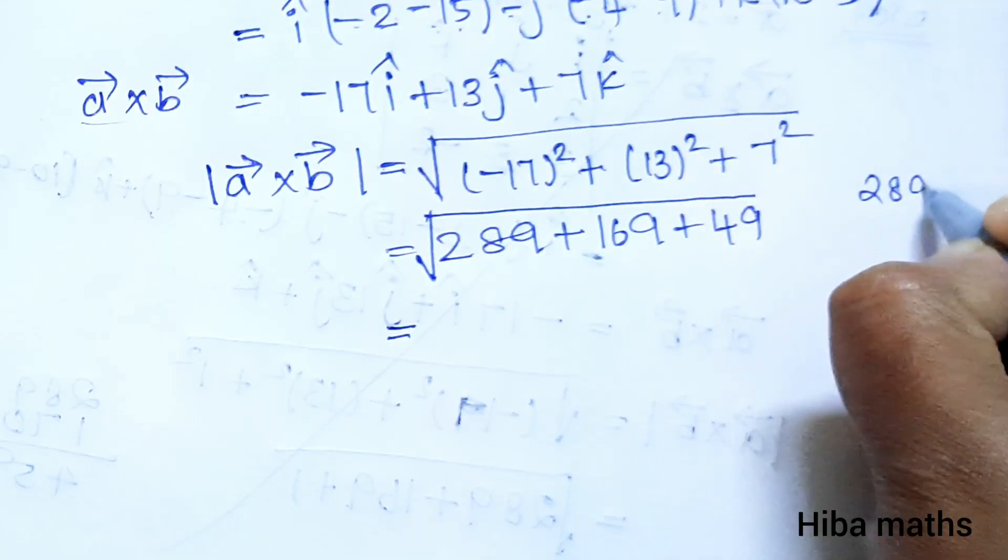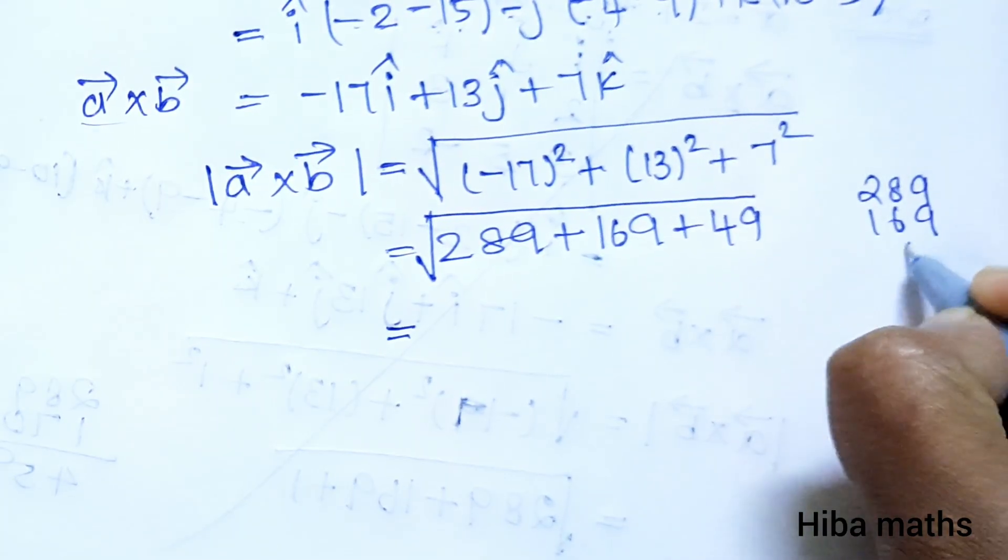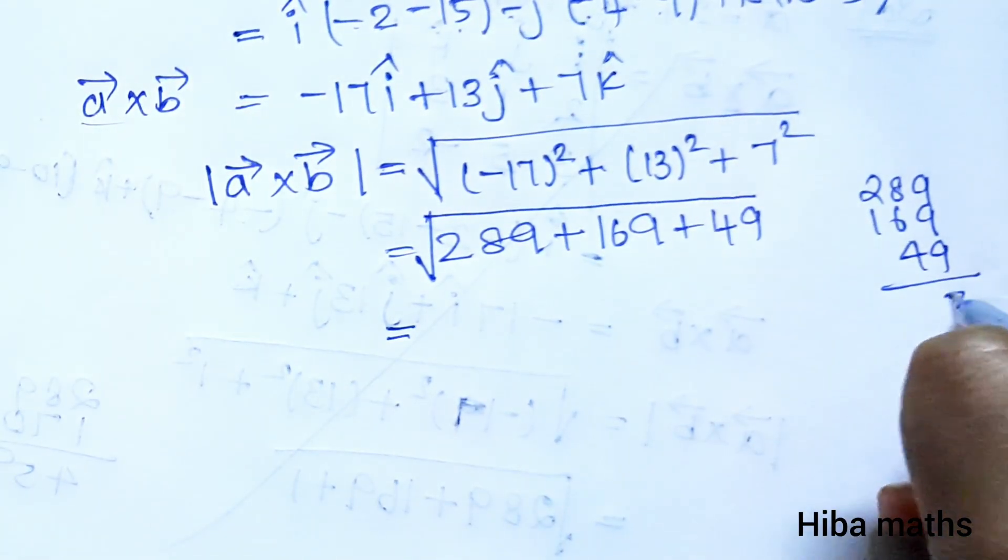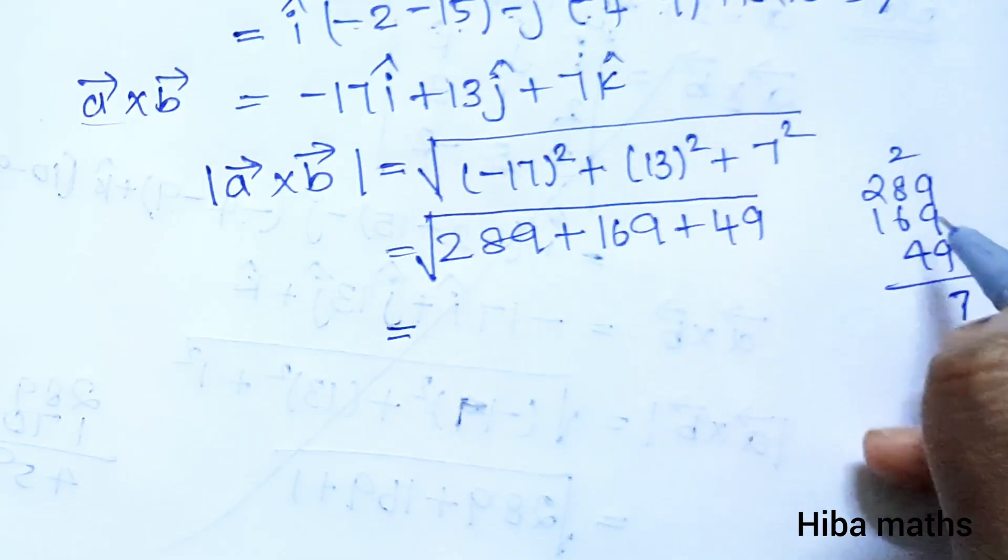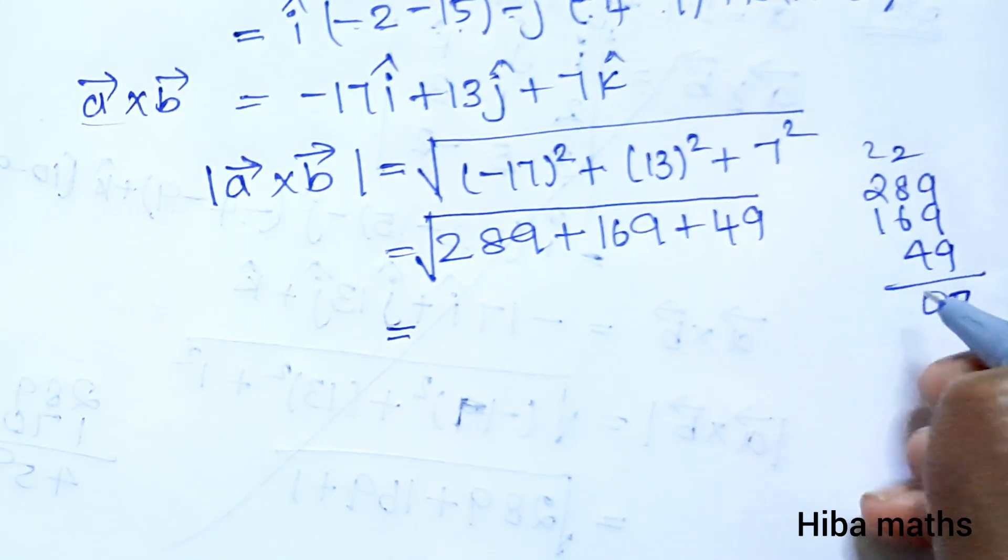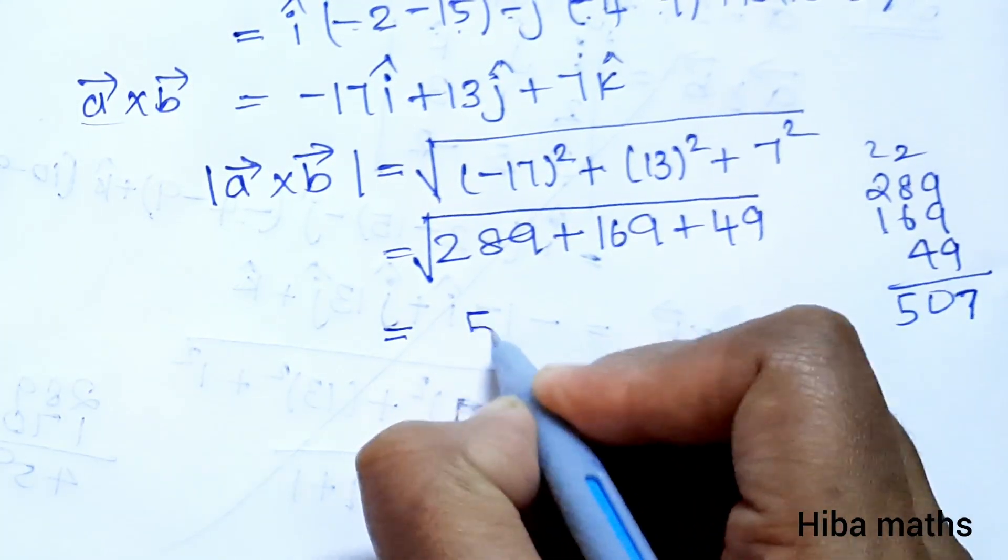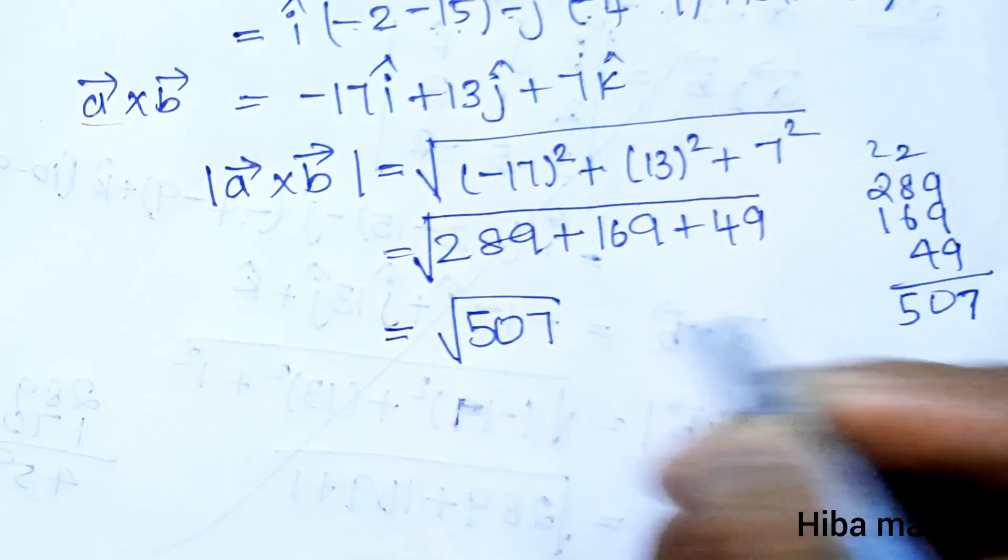289 plus 169 plus 49. Adding: 289 plus 169 is 458, plus 49 gives 507. So the magnitude equals square root of 507.